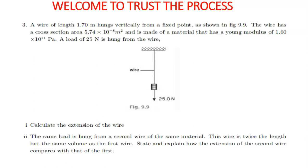The question reads: a wire of length 1.70 meters hangs vertically from a fixed point as shown in figure 9.9. The wire has a cross-sectional area of 5.74 times 10 to the negative 8 meters squared, and is made of a material that has a Young's modulus of 1.60 times 10 to the 11 pascals. A load of 25 newtons is hung from the wire. Calculate the extension of the wire.